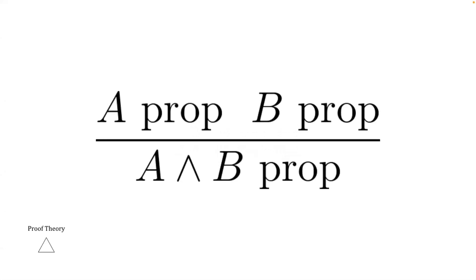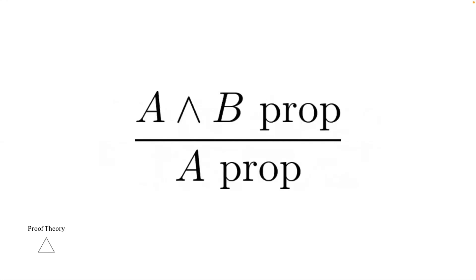For example, A prop, B prop deduces A and B prop. This is known as the introduction rule for conjunction, or also known as logical and. There are two elimination rules for conjunction. Here is one of them. A and B prop deduces A prop. And we can see that with deductive systems, we could create the rules for logic. With logic being defined, we could start expressing logical statements. A collection of these statements could describe some mathematical structure.